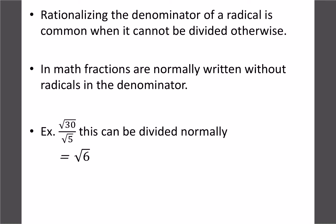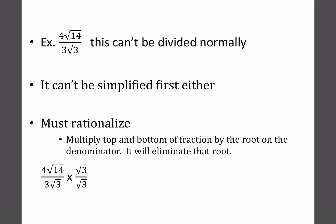When dividing, you still want to try to divide regularly or simplify first — that's your best bet. Rationalizing is your last choice. For example, with root 30 over 5, we can divide: 30 divided by 5 gives us 6, so we get root 6. It's a lot easier to do that if you can.